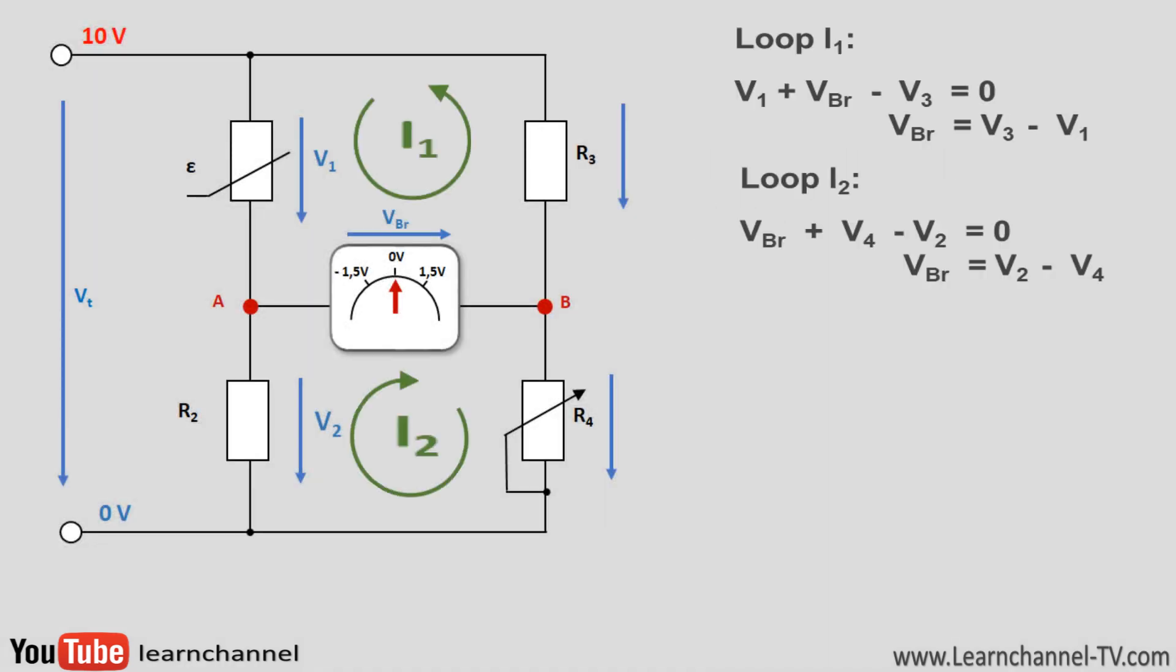Within this measuring bridge, you can define two loops. By following the voltage drops at each resistor of a loop, you get the following equations. The voltage drops at each individual resistor can be calculated, for example, by using the voltage divider formula.